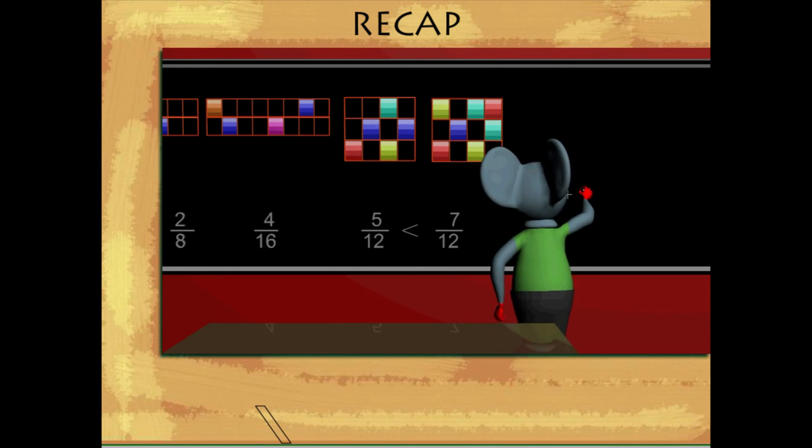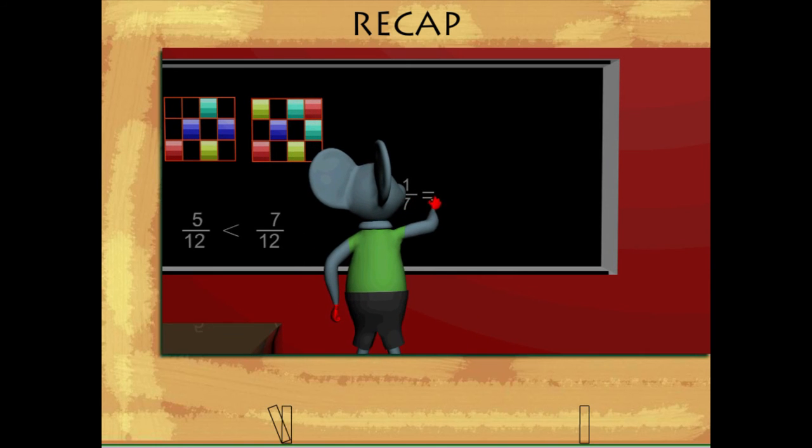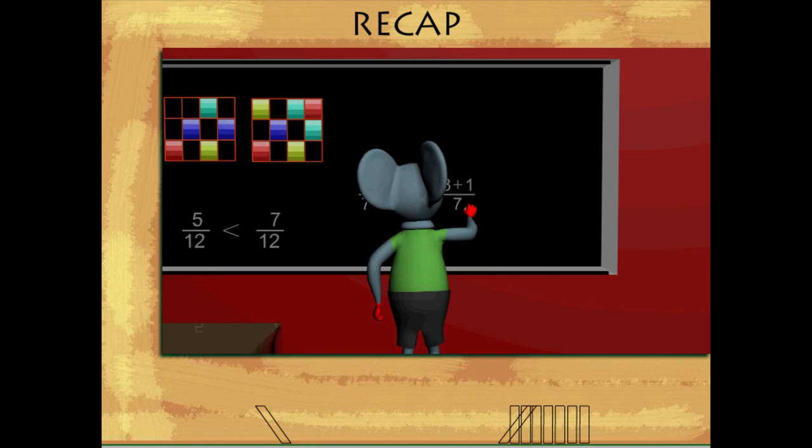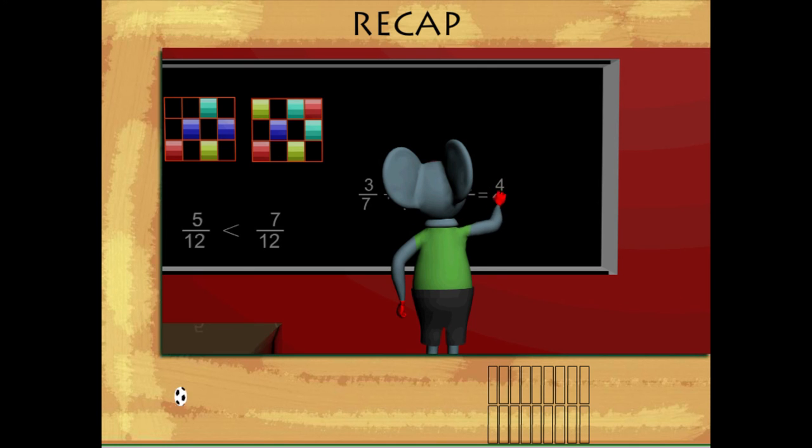Toby now writes three by seven plus one by seven equals three plus one by seven, because both are like fractions, and their total becomes four by seven.